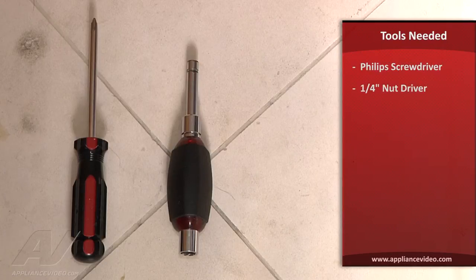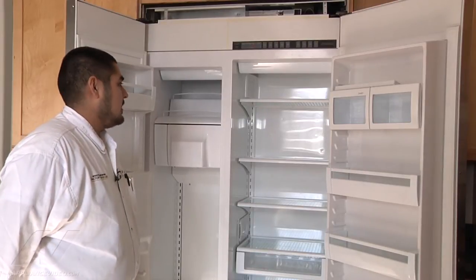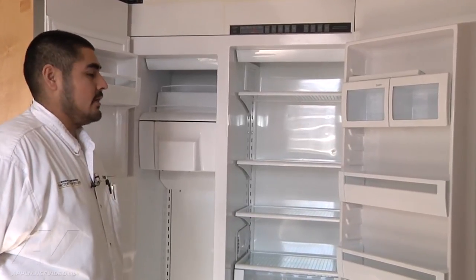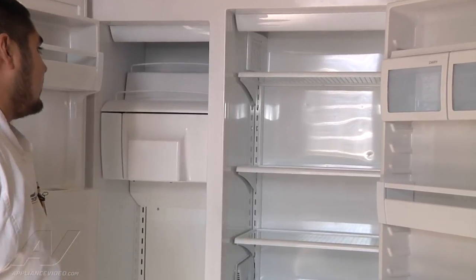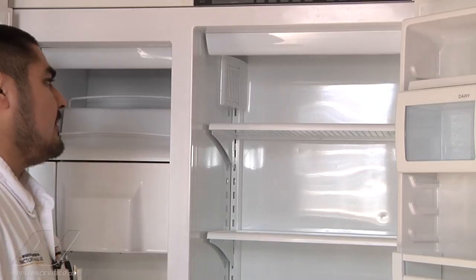To access the axial fan motor, we have to enter from the freezer side. There are two covers: one in the fresh food upper left-hand corner and one in the freezer right-hand corner. To begin, remove the top shelf in the fresh food section by lifting up and pulling out.